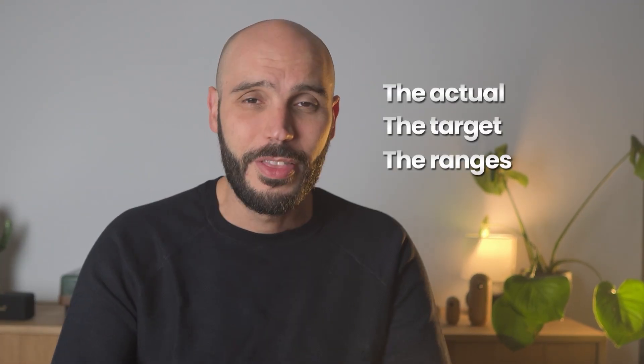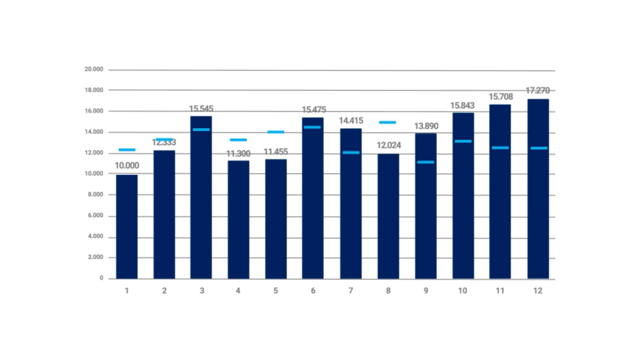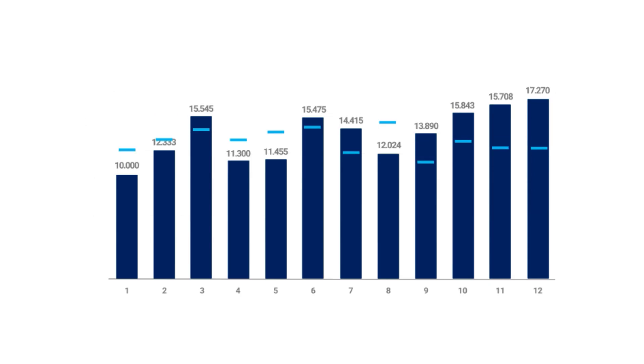Chart number 6: bullet charts. Bullet charts are fantastic when you want to show progress toward a goal over the longer term — they pack a lot into a small space: the actual, the target, and the ranges. They're especially useful in dashboards. If you don't want to use bullet charts, the alternative is a simple combo chart — a bar for the actuals and a line for the targets. Easy to read, easy to compare. Use your company's color for the actual value and a contrasting color for the target line. Keep labels minimal.